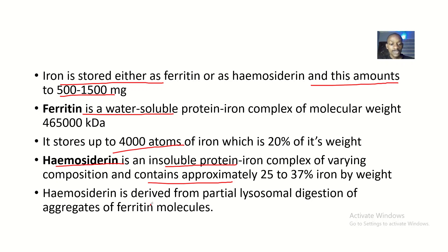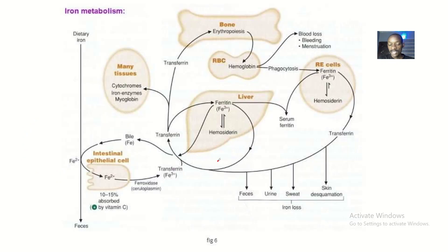Hemosiderin is derived from partial lysosomal digestion of aggregates of ferritin molecules. So hemosiderin is gotten from ferritin through digestion of ferritin. You should note the difference: ferritin is water-soluble, whereas hemosiderin is a water-insoluble substance. Iron can be stored in ferritin and iron can be stored in hemosiderin.